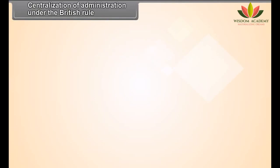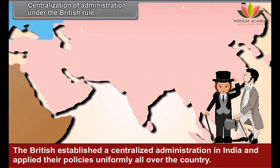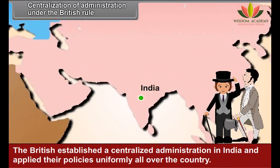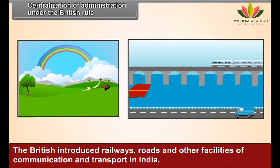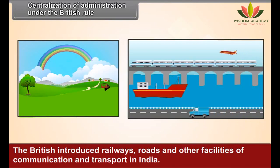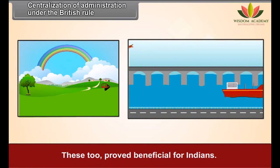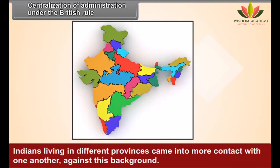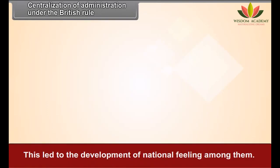Centralization of Administration Under British Rule: The British established a centralized administration in India and applied their policies uniformly all over the country. They also laid down a principle that all people should have an equal status before law. The British introduced railways, roads and other facilities of communication and transport in India. These too proved beneficial for Indians. Indians living in different provinces came into more contact with one another, and this led to the development of a national feeling among them.